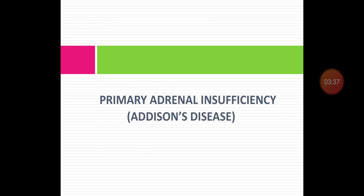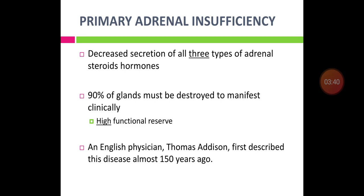Primary adrenal insufficiency, also called Addison's disease, involves decreased secretion of all three hormones: glucocorticoids, mineralocorticoids, and androgens. Before clinical manifestation, almost 90% of the gland is destroyed, though the adrenal gland has a high functional reserve. Addison's disease was first described by Thomas Addison almost 150 years ago, which is why this condition bears his name.